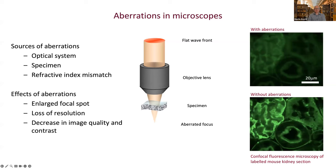The issue we're discussing today is the problems caused by aberrations in microscopes. Although microscopes are designed with perfect optics, in reality there are imperfections — partly due to design compromises, but often because of the optical properties of the specimen itself, which are not uniform. Specimens consist of regions of different refractive index, causing light wavefronts to become distorted. Even with a perfect system, the specimen causes focal spot distortions, leading to loss of resolution and decreased image quality and contrast, as clearly shown in the examples on the right.